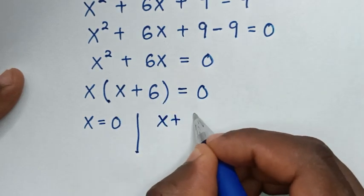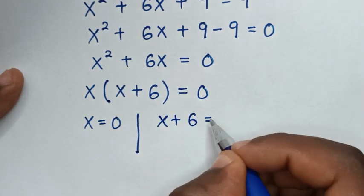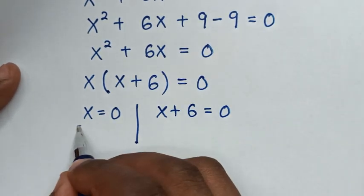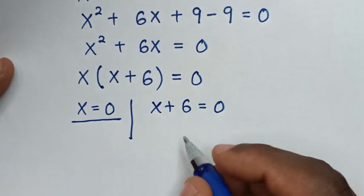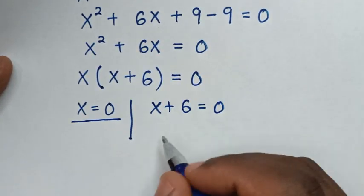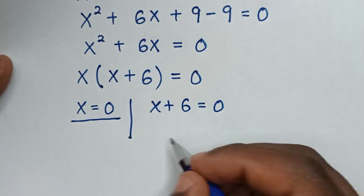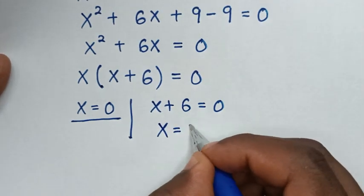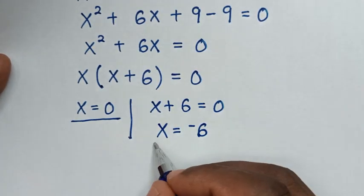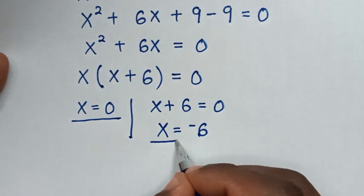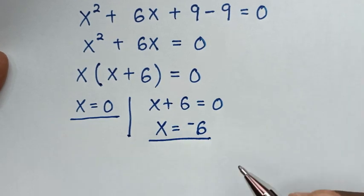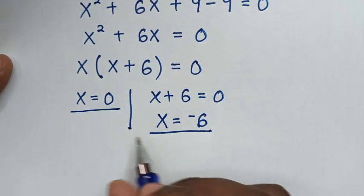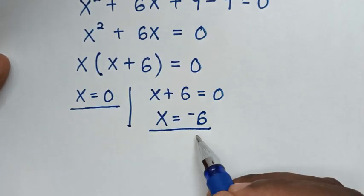The first value of x is 0. From the second solution, x + 6 = 0, we take 6 to the right side, so x = −6. This is the second value of x. So we have two values of x.